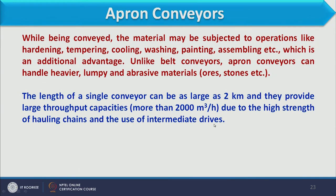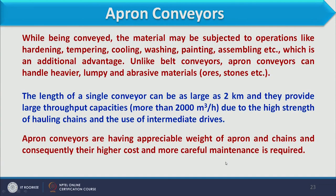The maximum length of an apron conveyor can be up to two kilometers, and they provide large throughput capacity—more than 2000 cubic meters per hour—due to the high strength of hauling chains and use of intermediate drives. Unlike belt conveyors which have drive pulleys only at the two ends, apron conveyors can have intermediate drives, giving them greater strength and capacity.